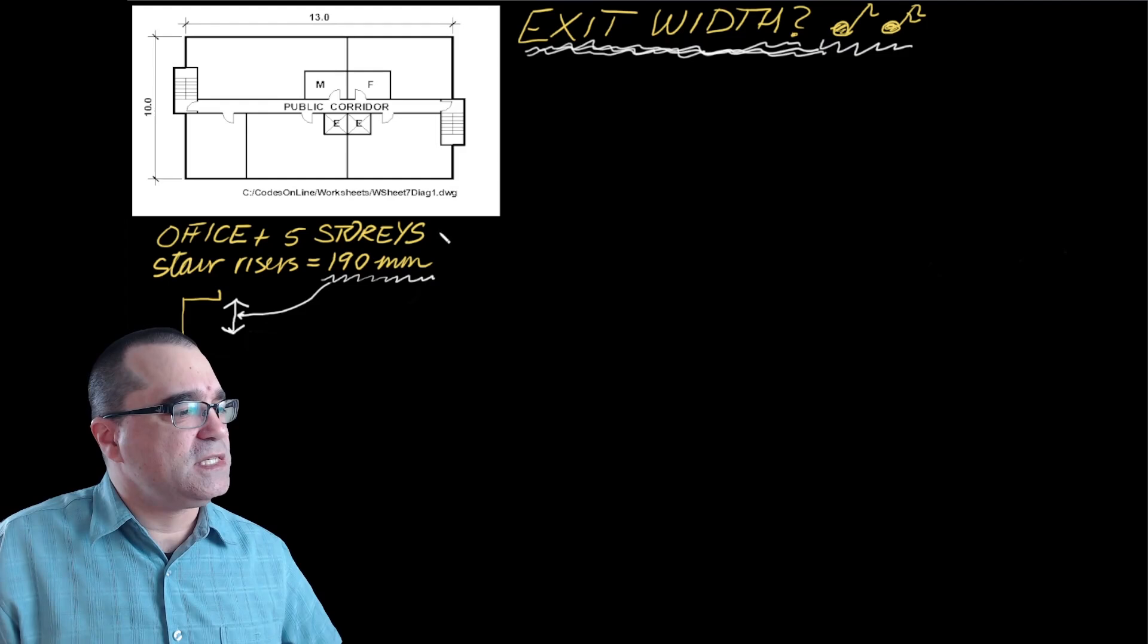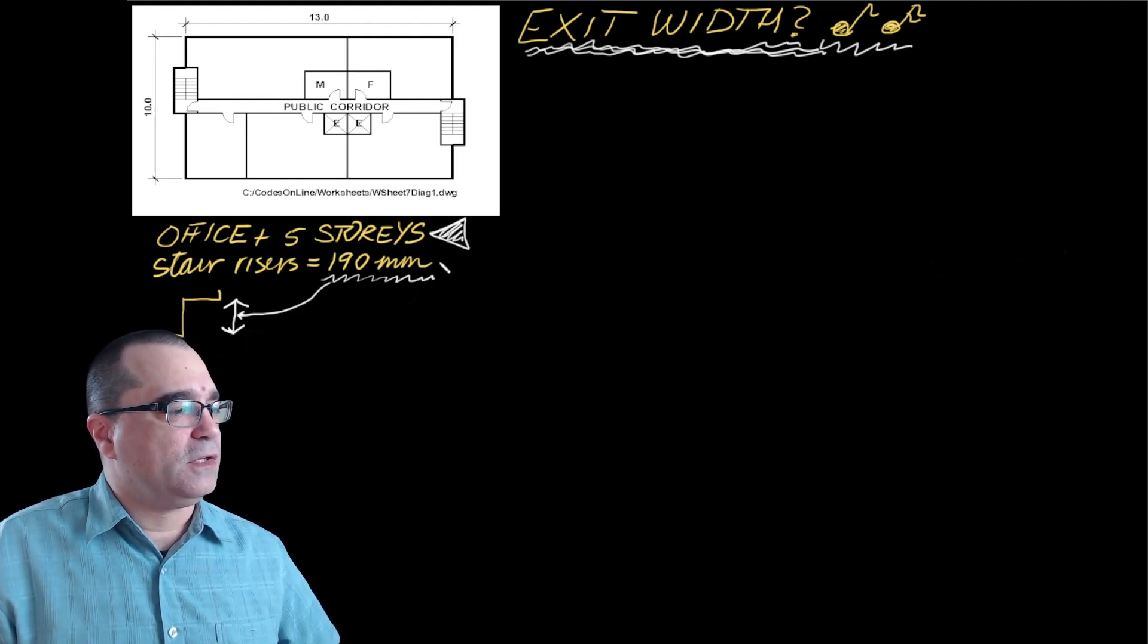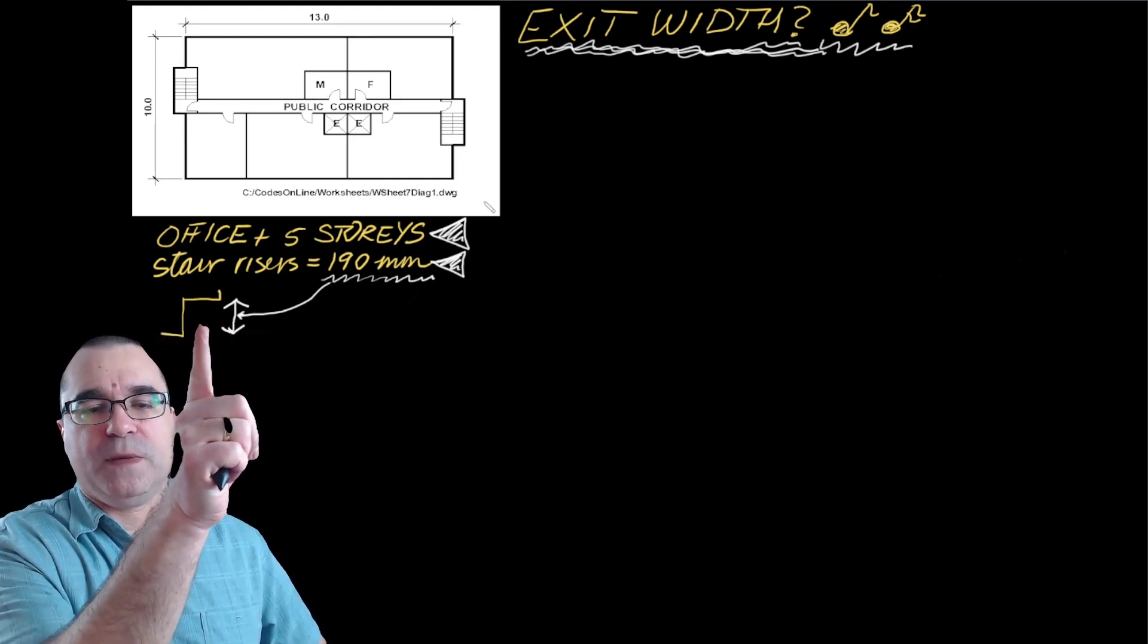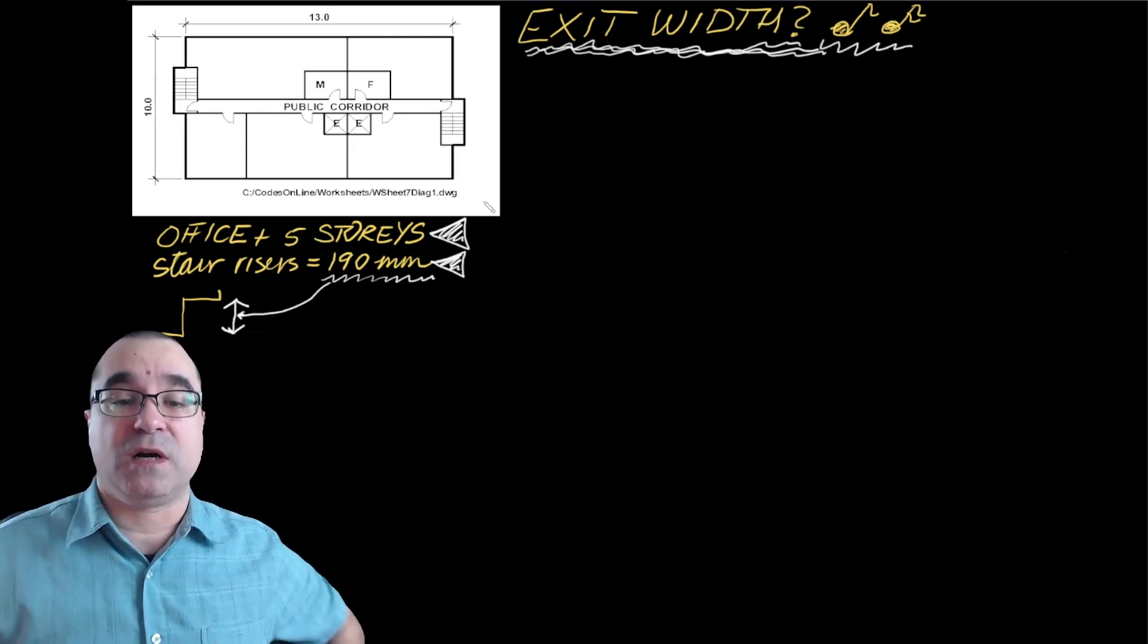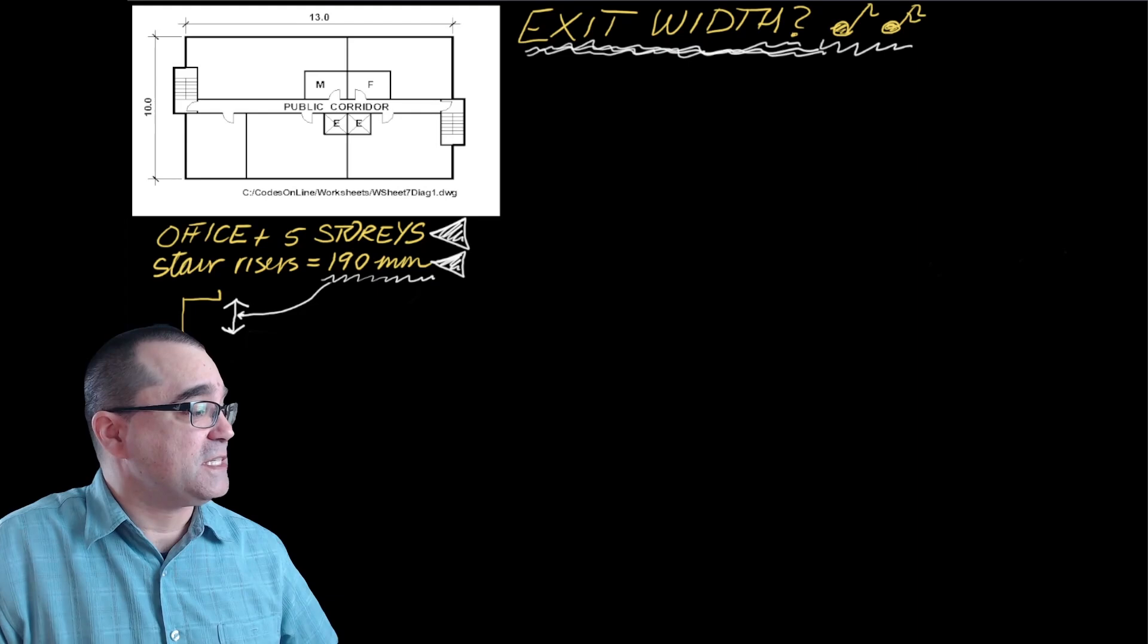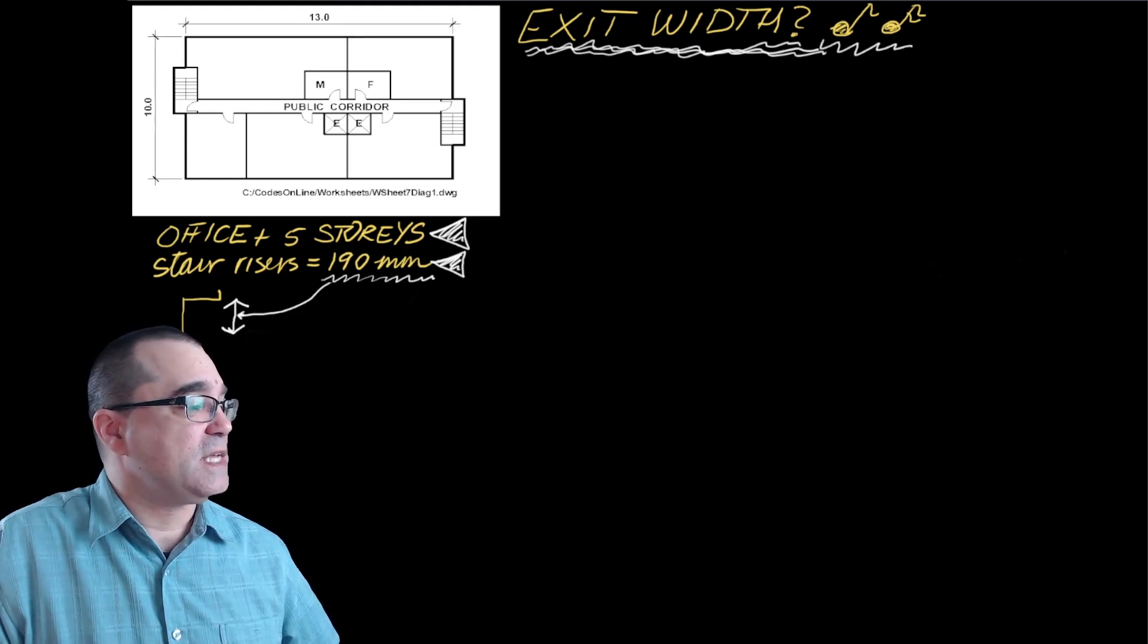This is a five-story office building where the stair risers are 190 millimeters. So that means the vertical dimension of these steps are 190 millimeters. And we're going to do it based on six steps. These six steps right here.